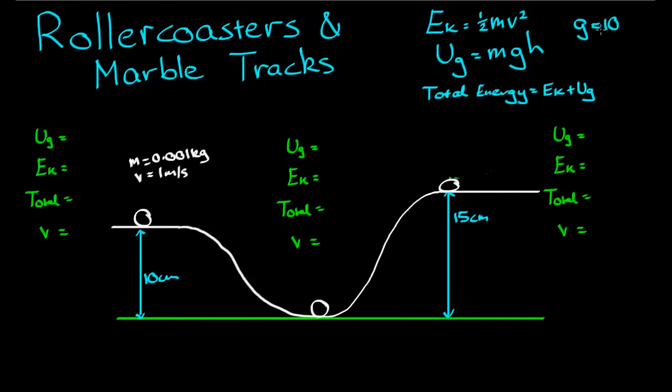Some people say 9.8 is more accurate. That's true. We're going to use 10, because that's what the VCE uses. So gravitational potential is equal to mgh. That's 0.001 times 10 times 0.1. That's a total of 0.001 joules. So gravitational potential, 0.001 joules. It's not very big, because the marble is not very heavy, and it's not very high.